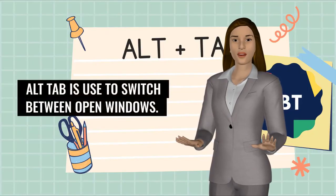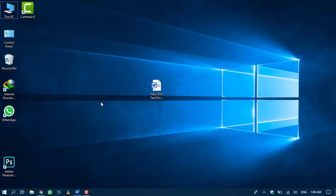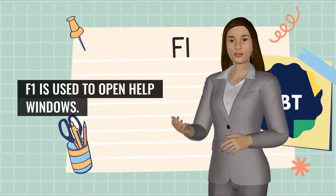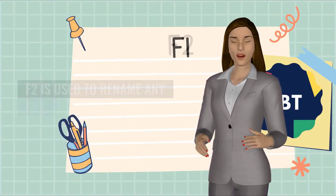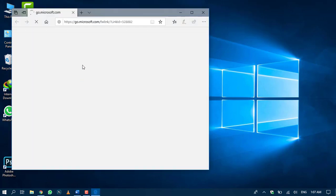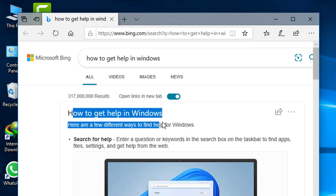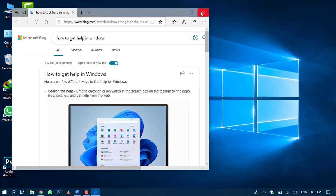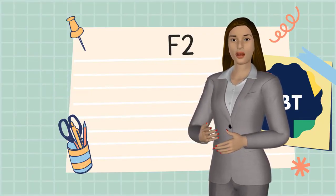Number 12 is Alt Tab. Alt Tab is used to switch between open windows. Number 13 is F1. F1 is used to open the help window. Number 14 is F2. F2 is used to rename any file.